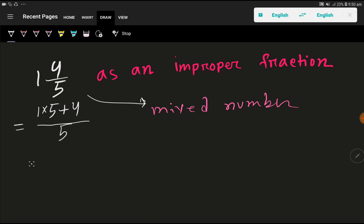Now we calculate: 1 times 5 equals 5, plus 4 equals 9. So we're getting 9 over 5.